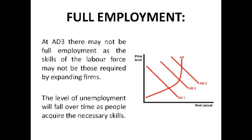We're now going to show employment on a Keynesian Aggregate Supply Curve. At AD1, quite a few people are employed because we're making quite a bit of output, but not everybody — there's still capacity to make more. As we shift along to AD2, more people are employed.